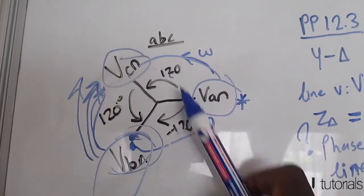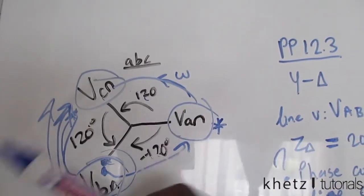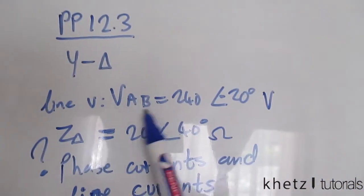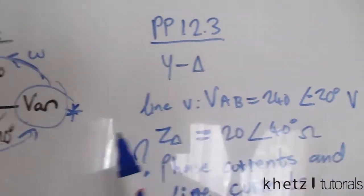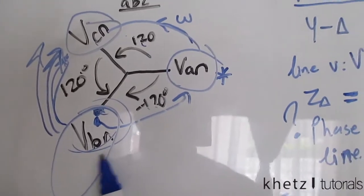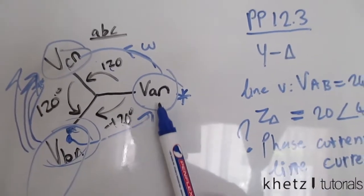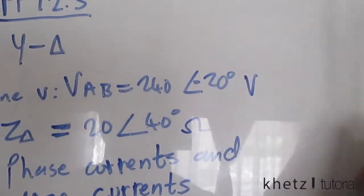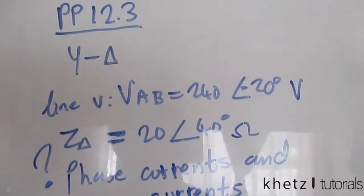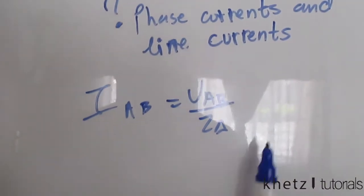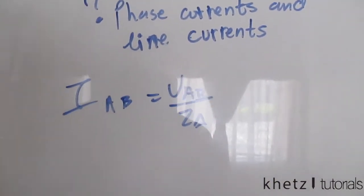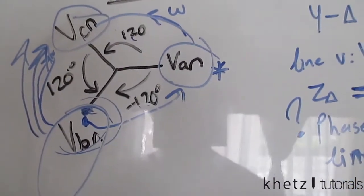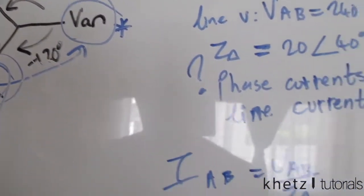Once you have one value, you can find the rest. For example, if you have VAB and want to find VBC, you just subtract 120 degrees from the angle of VAB to get the angle of VBC. We can use this one formula and this relationship between all phase currents to find the other phase currents.